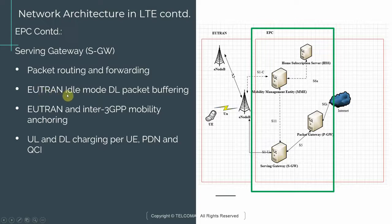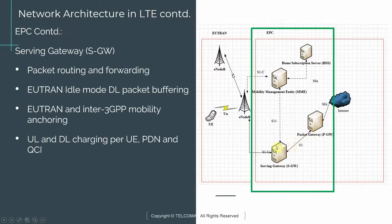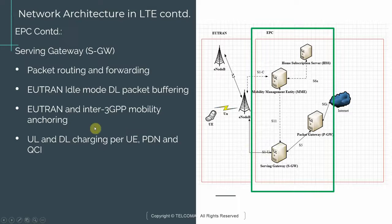The SGW is also responsible for EUTRAN idle mode downlink packet buffering. For example, if a UE is not currently attached to the network and an incoming WhatsApp message arrives, the message travels from the internet through the Packet Gateway to the Serving Gateway. The SGW determines that the UE is not connected and buffers the message until the UE connects, at which point it is delivered via the eNodeB.